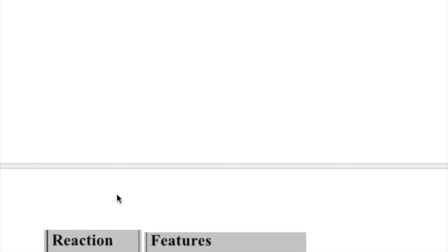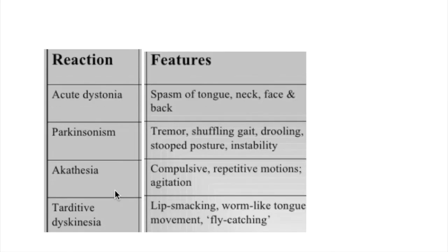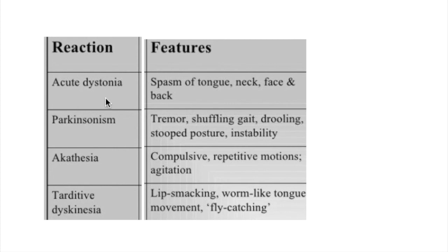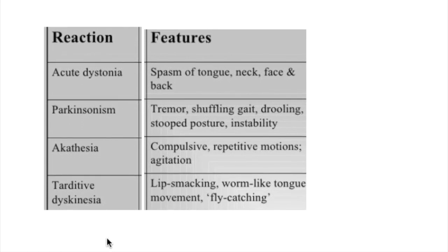The features of extrapyramidal disorders include acute dystonia, akathisia, and tardive dyskinesia. In acute dystonia, there is spasm of the tongue, neck, face, and back. In akathisia, there is compulsive repetitive movements and agitation. In tardive dyskinesia, there is lip smacking and worm-like tongue movement known as fly catching.